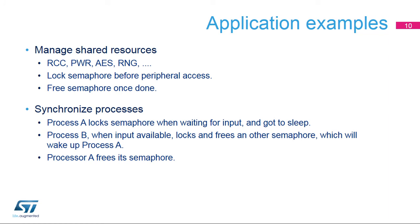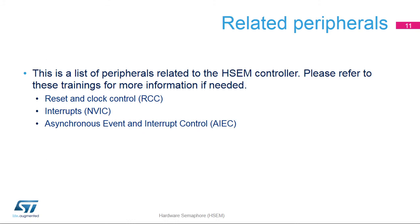Semaphores can be used to handle: 1. Access to shared resources — this allows you to read, modify, and write registers in a protected way, or to share functions like the AES encryption engine, random number generator or RNG, etc. 2. Synchronization between processes — used by a process to wait for input from another process. Here is a list of peripherals related to the HSEM module. Users should be familiar with all the relationships between these peripherals to correctly configure and use the HSEM module.